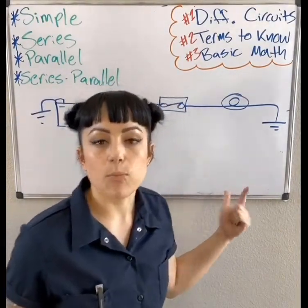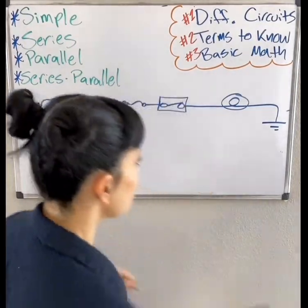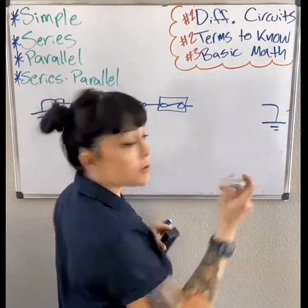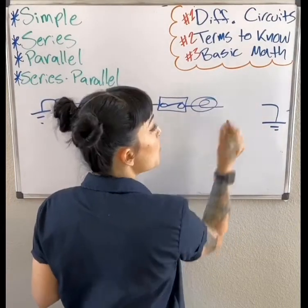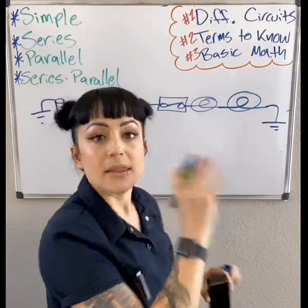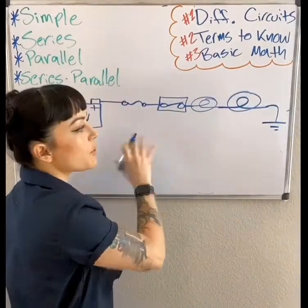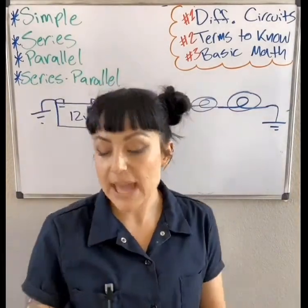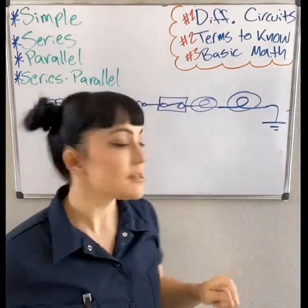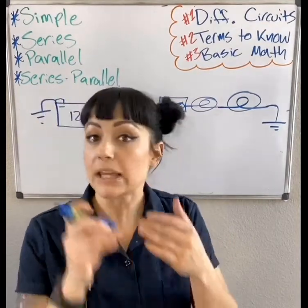What if I wanted to add another load — another light bulb? How I wire that depends on whether it's a series circuit or a parallel circuit. If I put the light bulb in line with the other load, that's called series, because these loads are in series. So anything more than one load wired in line is a series circuit — it could be two loads or two million.